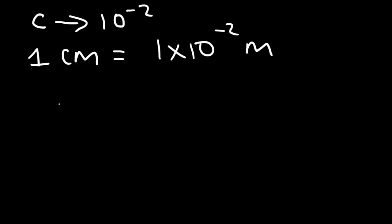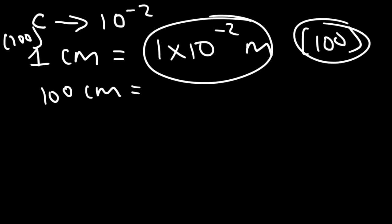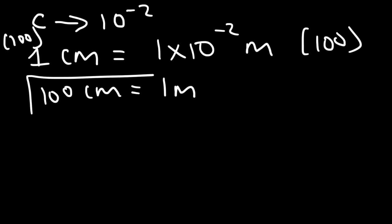Now, if you multiply both sides by 100, you can also get this common conversion factor. On the left, you'll get 100 centimeters. If you multiply 1 times 10 to the minus 2 by 100, you'll get 1. So this also means that 1 meter is equal to 100 centimeters.